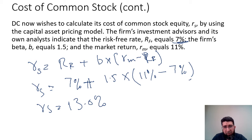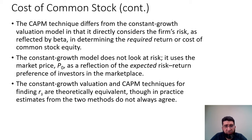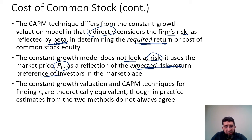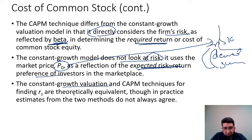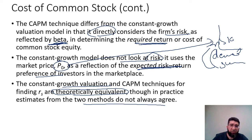The result is the same as the constant growth model — 13%. However, it is not necessary that both methods agree. The CAPM technique differs from the constant growth valuation model in that it directly considers the firm's risk as reflected by beta. The constant growth model does not look at risk directly, but uses the stock price as a reflection of the expected risk-return preference. In practice, estimates from the two methods do not always agree.